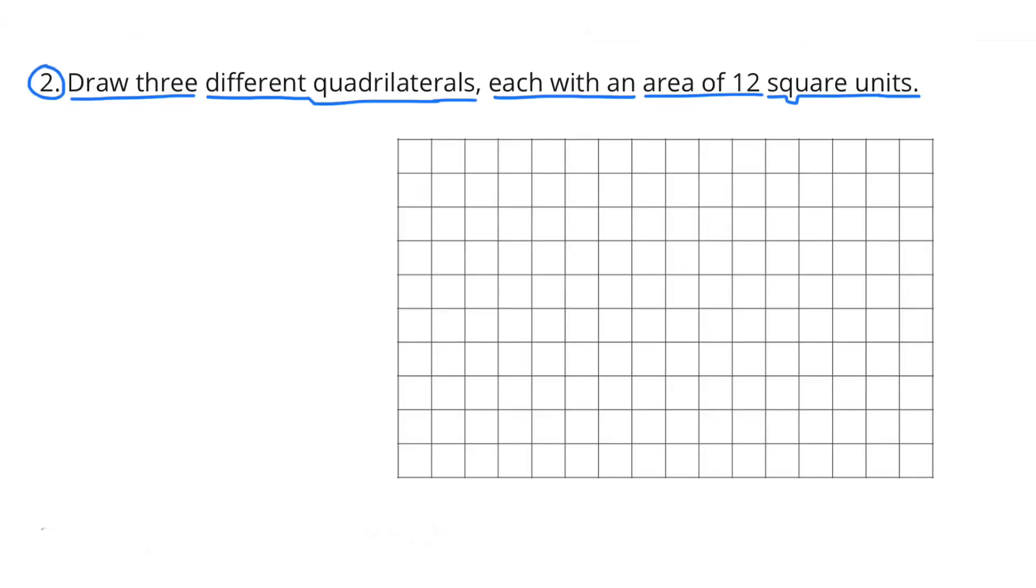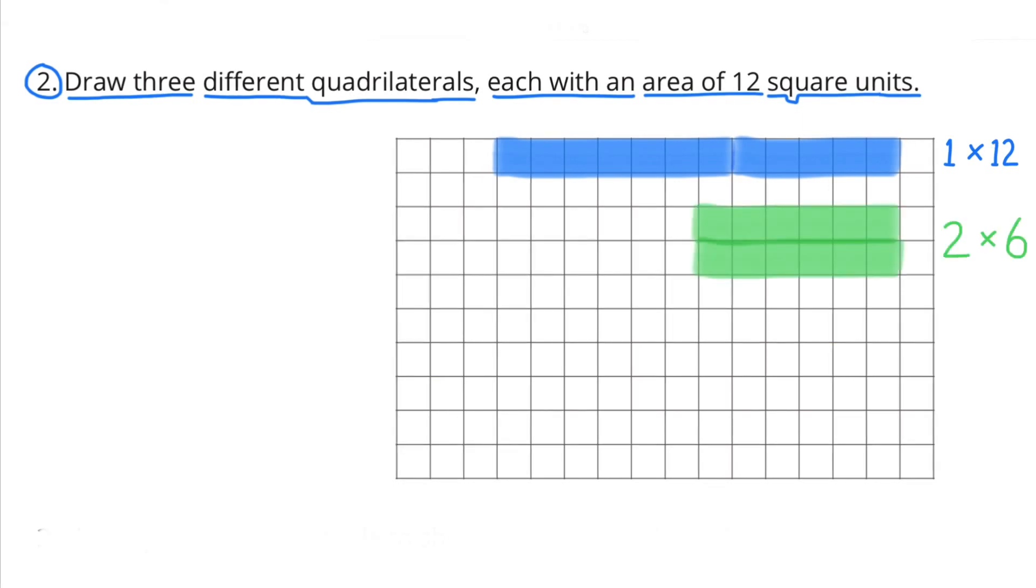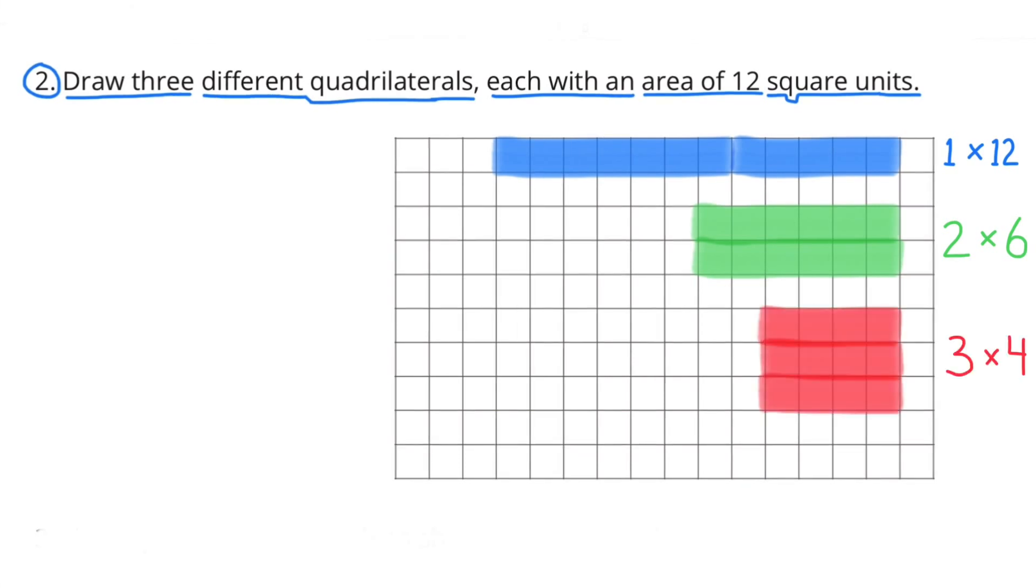Number 2. Draw three different quadrilaterals, each with an area of 12 square units. In blue, I've drawn a quadrilateral with an area of 12 square units, and its dimensions are 1 by 12. In green, the dimensions are 2 by 6. And the third quadrilateral's dimensions are 3 by 4.